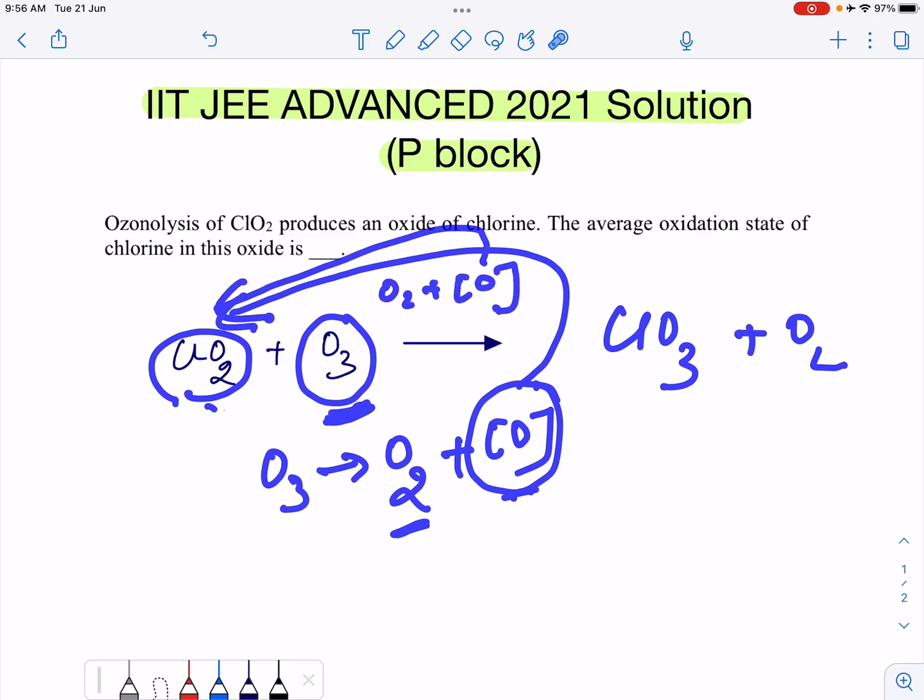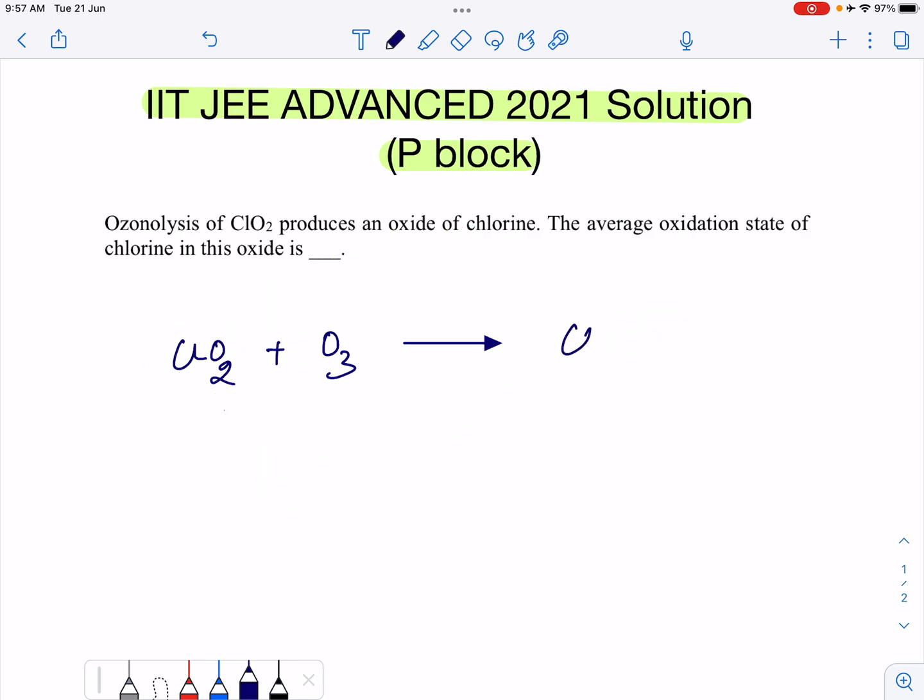This ozone molecule breaks into O2 plus O. This nascent oxygen oxidizes ClO2 into ClO3, so the reaction will be ClO3 and O2. Now let's draw the structure and understand actually what happens structure-wise. ClO2: Cl has seven valence electrons, so we have used four valence electrons here and then there is one lone pair and then finally we have one odd electron. So ClO2 is an odd electron molecule. When it reacts with ozone, this is the structure for ozone. There is one coordinate bond over here, oxygen is coordinating another oxygen. So it will form ClO3.